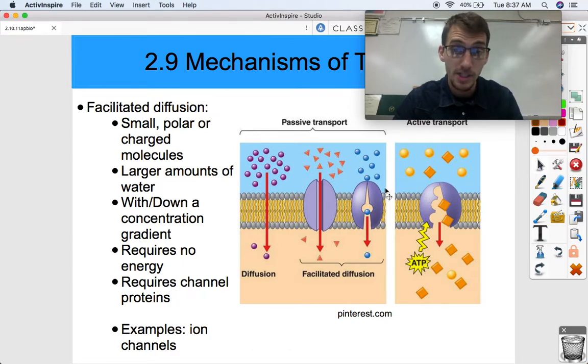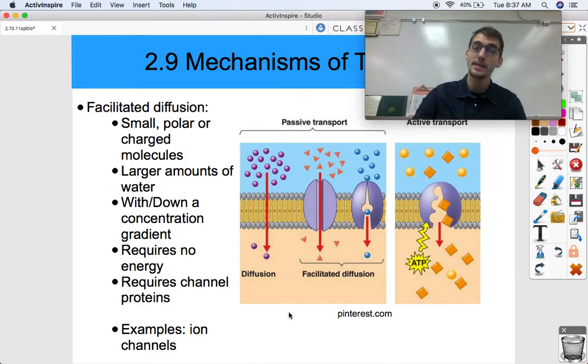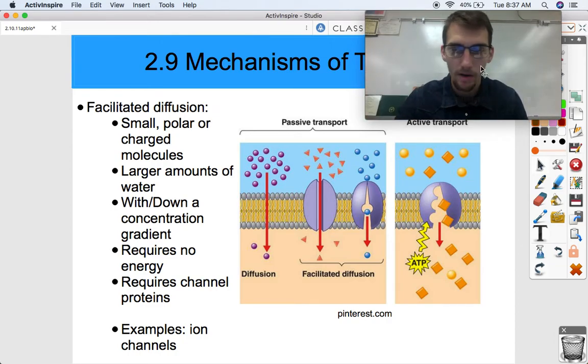So again, those are going to be channel or carrier proteins. And an example of facilitated diffusion is through an ion channel, like the sodium channels or potassium channels that we referenced earlier in another video. They can open up in response to a change in voltage and then allow potassium to enter the cell or allow sodium to exit the cell or vice versa.